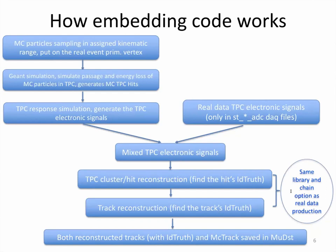Question: Do you mean that the real TPC hits from real data and the Monte Carlo TPC hits both have id_truth? Answer: No — only the reconstructed hits with Monte Carlo correspondence have id_truth. The real data hits, if they don't overlap with Monte Carlo hits, will not have id_truth.